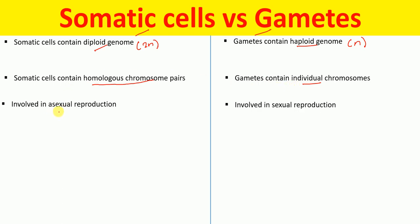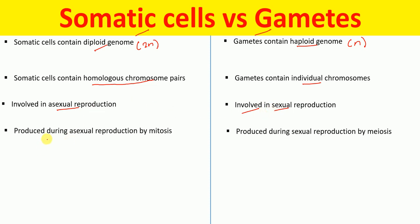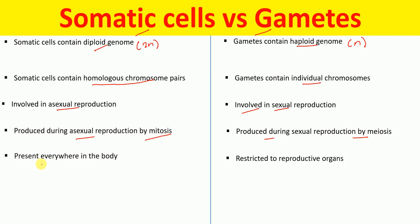Somatic cells are involved in asexual reproduction, whereas gametes are involved in sexual reproduction. Somatic cells are produced during asexual reproduction by mitosis, whereas gametes are produced during sexual reproduction by meiosis.